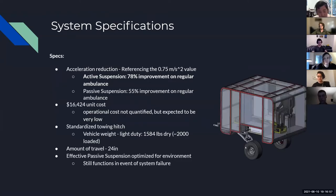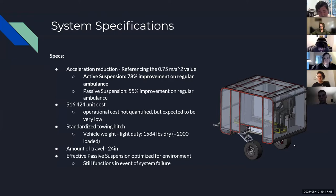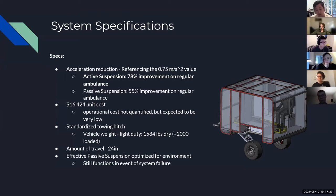In terms of system specifications, our acceleration reduction was quite impressive — we achieved a 78% improvement over regular ambulance acceleration with our active suspension system. We also have a passive suspension linked in series, so even if the active suspension fails, that passive suspension still showed a 55% improvement on regular ambulance acceleration. We also have a very low unit cost of $16,424.